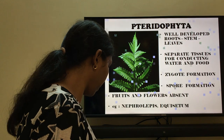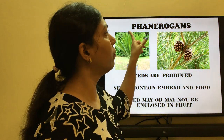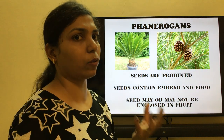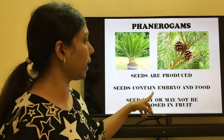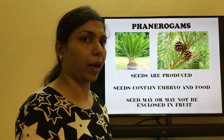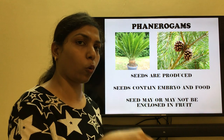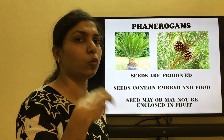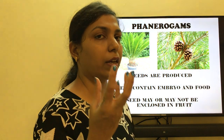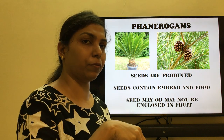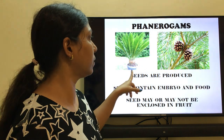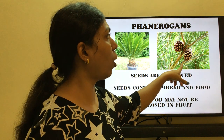Then you have Phanerogams. In Phanerogams, seeds are produced. The seeds contain an embryo and food — inside the seed you have an embryo which forms the new plant, and food material is stored inside the seed for the embryo to grow. The seed may or may not be enclosed in a fruit. Examples include Cycas and the pine tree.